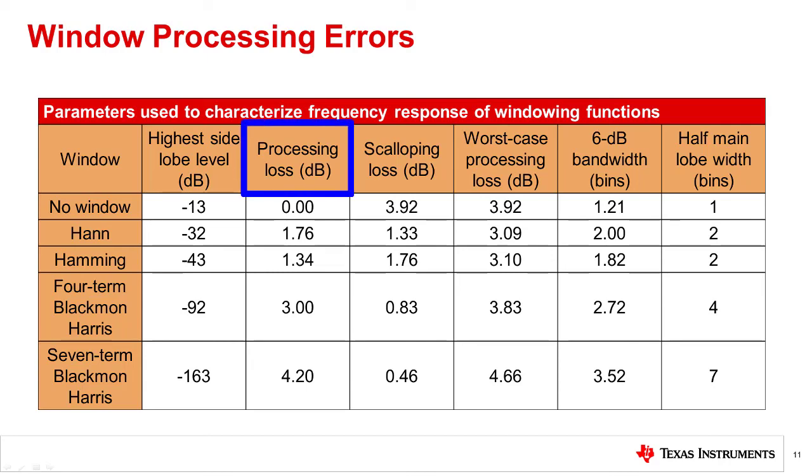Processing loss is the reduction in SNR due to the signal spreading across the main lobe width. Because of this spreading in the signal power, a gain correction factor must be used to accurately compute SNR. The processing loss assumes the frequency of the test signal falls exactly in the middle of the frequency bin.